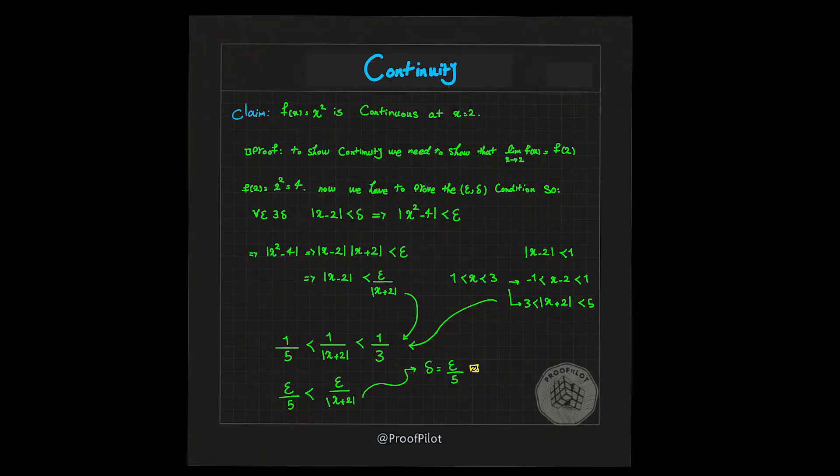So you are telling me that you just proved that f(x) equal to x squared is continuous at point x equal to 2 by this much of writing?